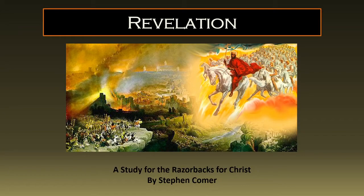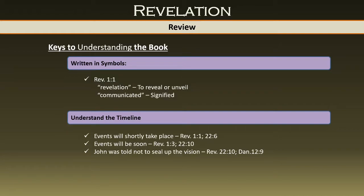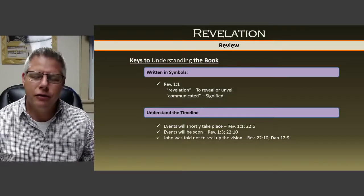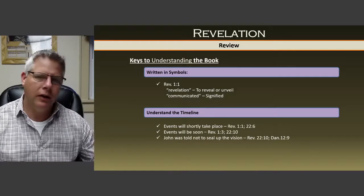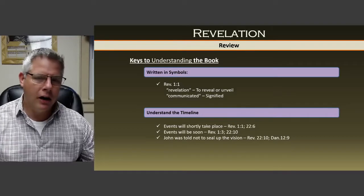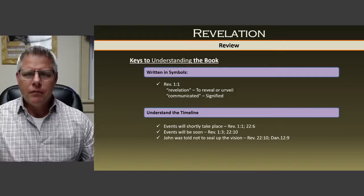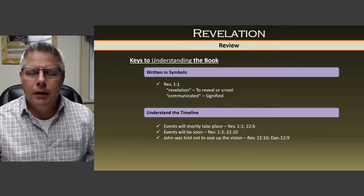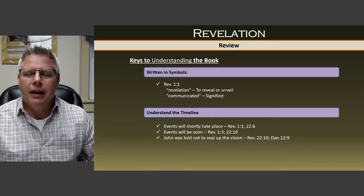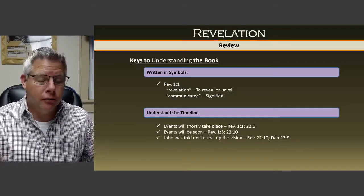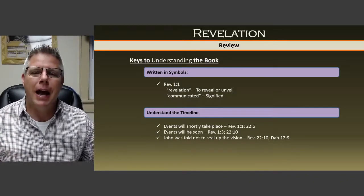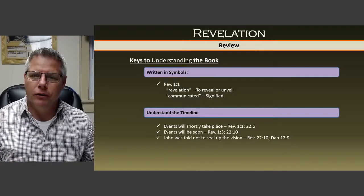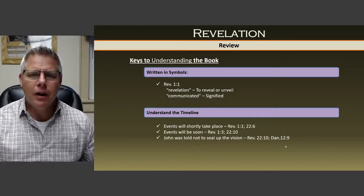Just by way of review, some ideas that we see in the book: first off, the book is written in symbols and there is a timeline. These are the two keys we talk about in understanding the book. If you're not looking at the book from John's perspective, if you're not looking at it the way the Holy Spirit is telling us to interpret it, then we're going to be misguided. The key is letting God tell us how to understand the book — written in symbols, with a timeline.